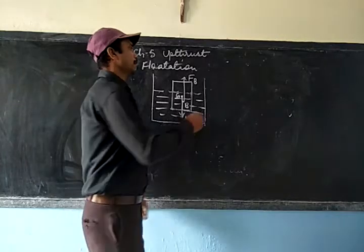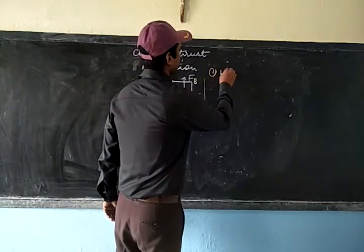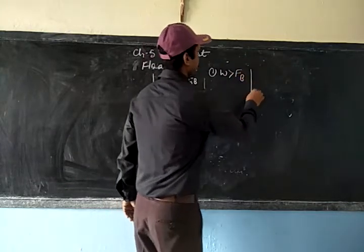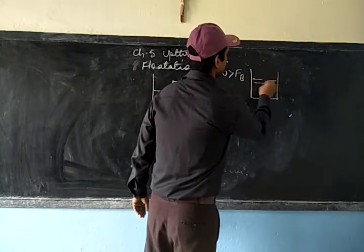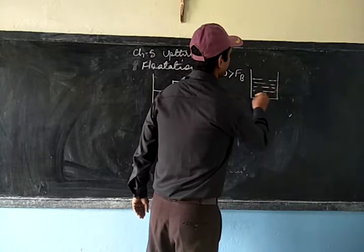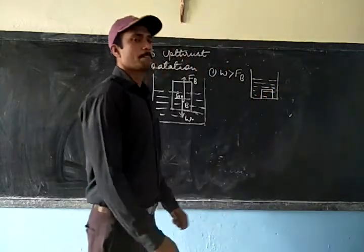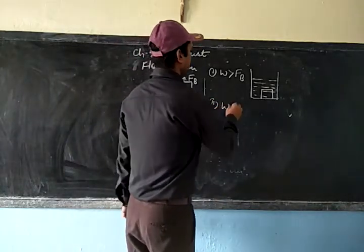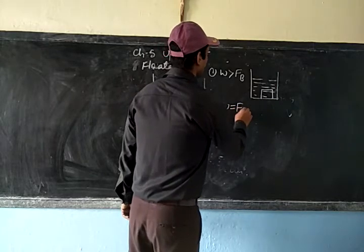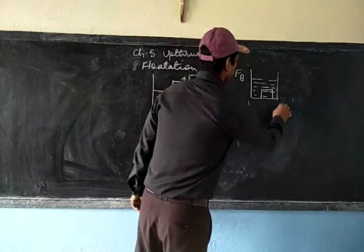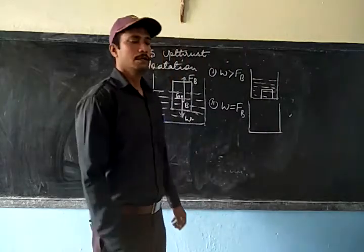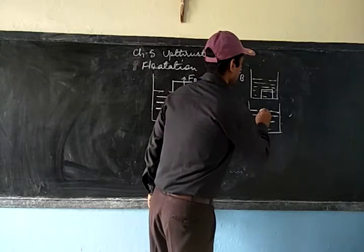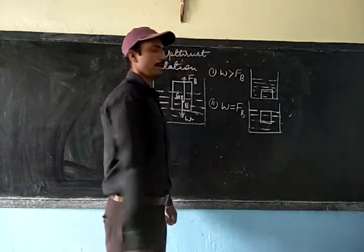There are three cases. First, when the weight of the body is greater than the upthrust, the body will completely sink. Second, when the weight of the body is equal to the upthrust, the body floats with all its parts inside the water.